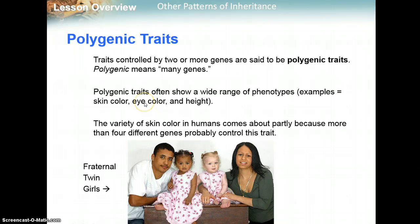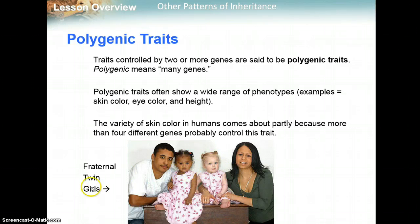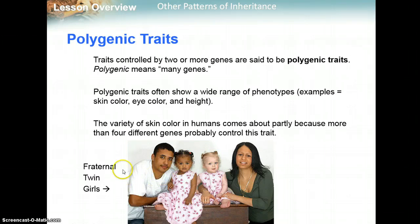Height can range from around four foot five to six foot five — a big range we see in our population. The variety of skin color in humans comes about partly because more than four genes probably control this trait. This is an interesting picture — these girls are actually fraternal twin girls, not identical. The parents are likely of mixed ethnicity. This child got more of the genes for lighter skin, and this child got more of the genes for darker skin.